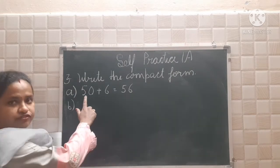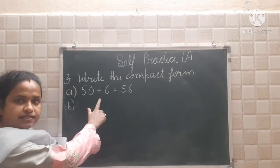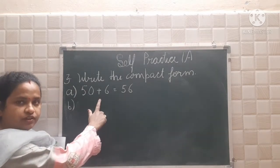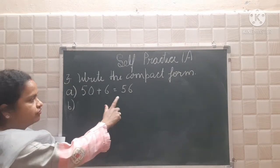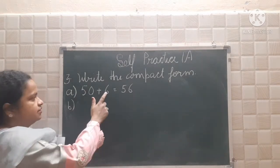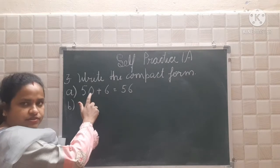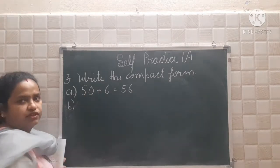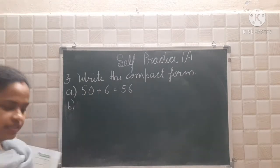See here: 50 plus 6. What will it be equal to? 56. Now 6 plus 0 — 0 and 5 will come. 56.